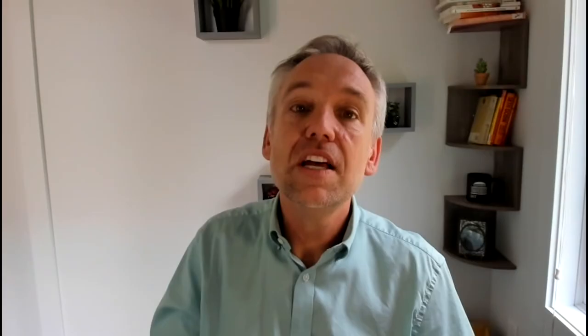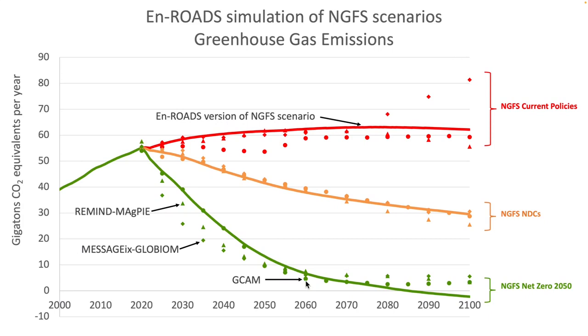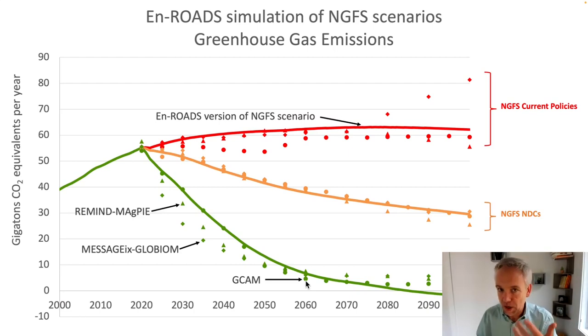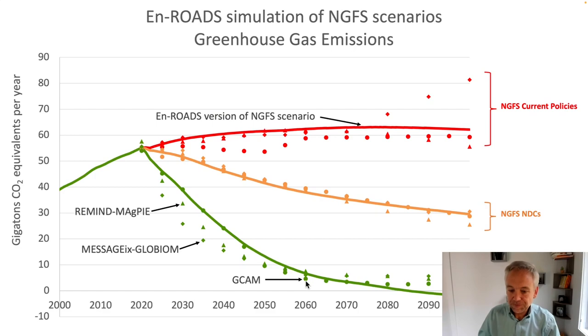Remind Magpie is the triangle, Message Globiom is the diamond, and GCAM is the circle. Now we'll show you the results where we, as closely as possible, replicated the inputs into their models into En-ROADS — changing things like carbon price in the future, energy efficiency, cuts to deforestation, cuts to methane, etc. Here are those results, and we can see how close or far away we are to the others. This doesn't validate En-ROADS; this is part of a whole suite of confidence-building tests that helps us improve the model and builds confidence that it is appropriate to its purpose.